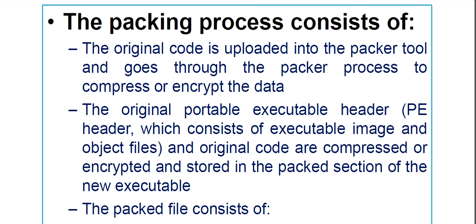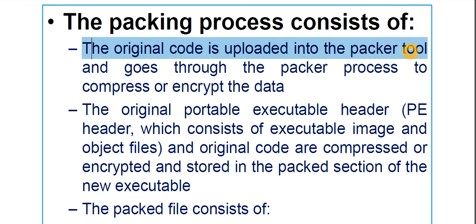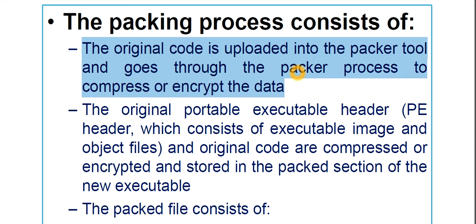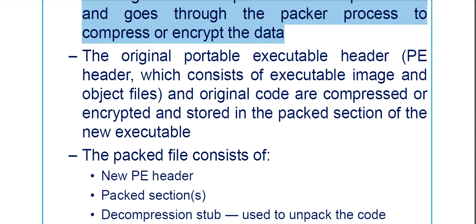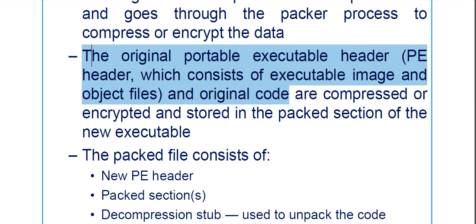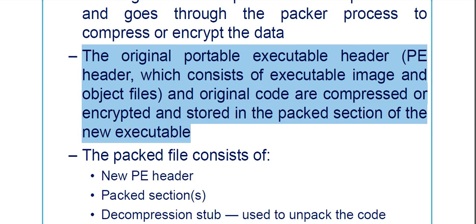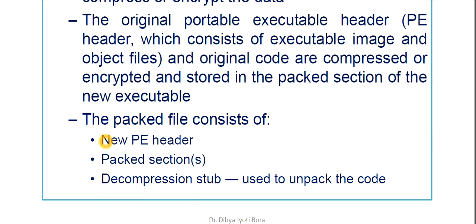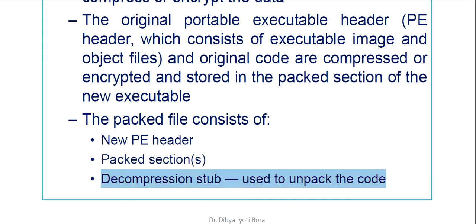What are the steps involved in the packing process? The original code is uploaded into the packer tool and goes through the packer process to compress or encrypt the data. Then the original portable executable (PE) header — which consists of executable image and object files — and the original code are compressed or encrypted and stored in the packed section of the new executable. So the packed file consists of a new PE header, the packed section, and the decompression stub used to unpack the code.